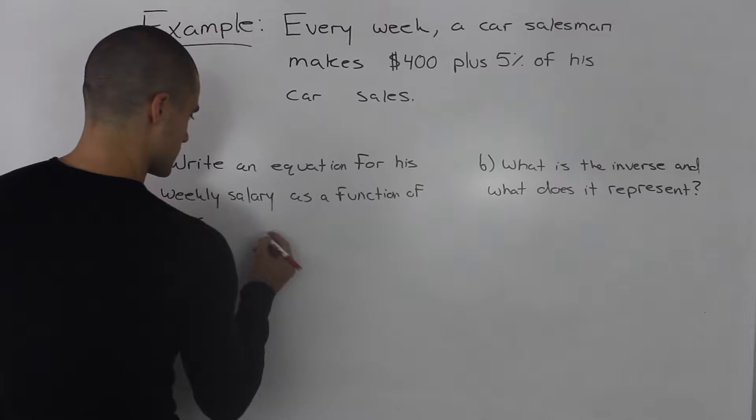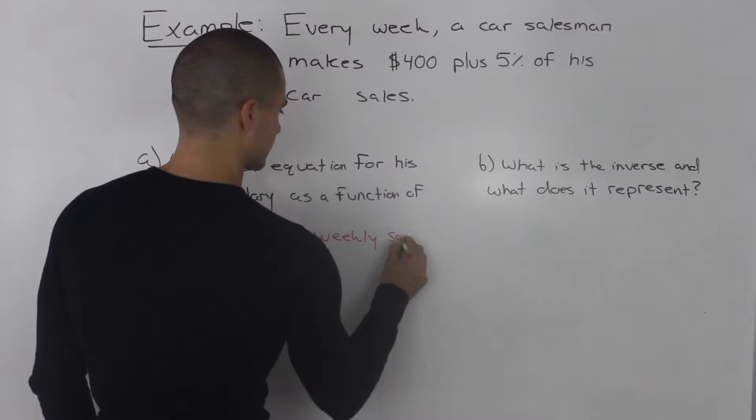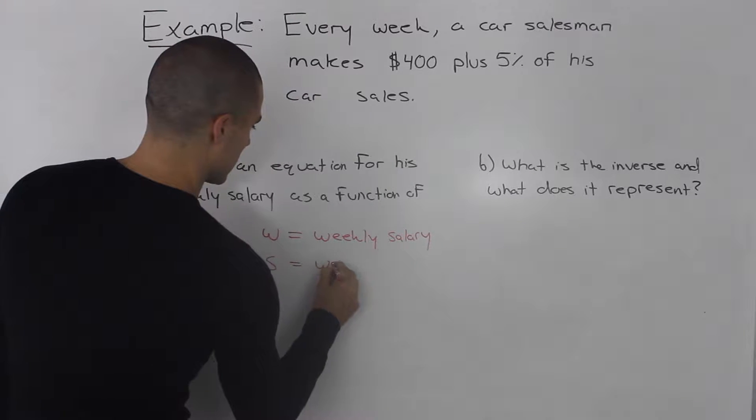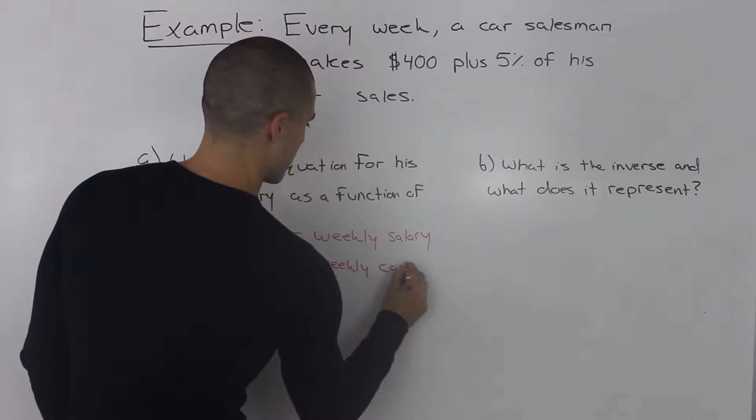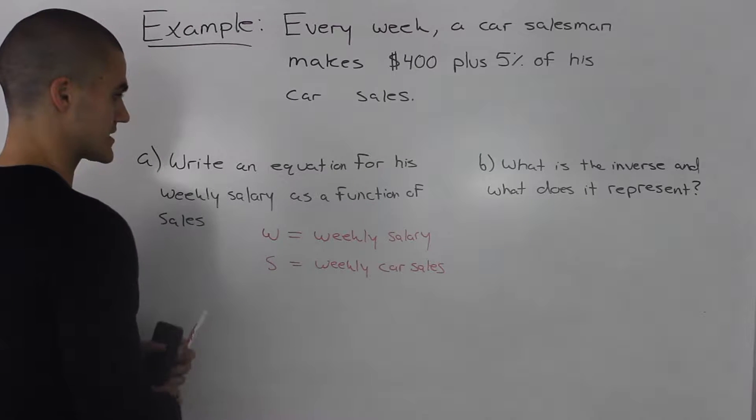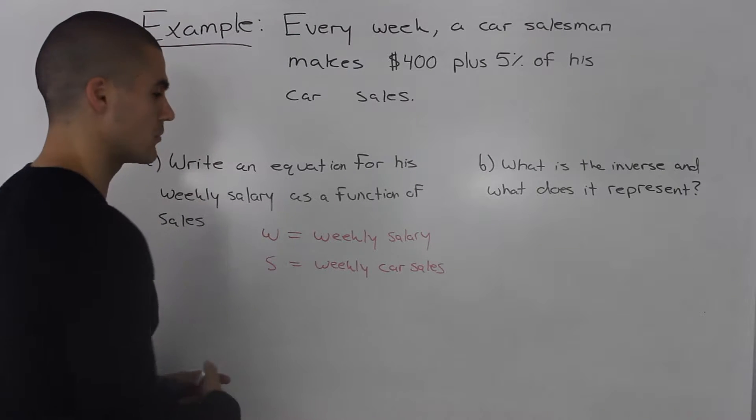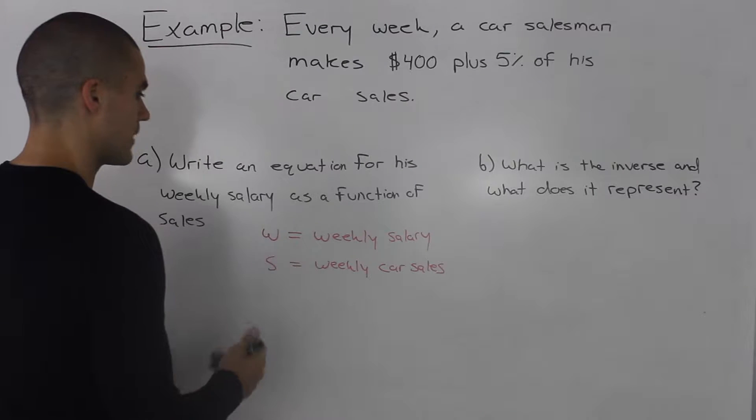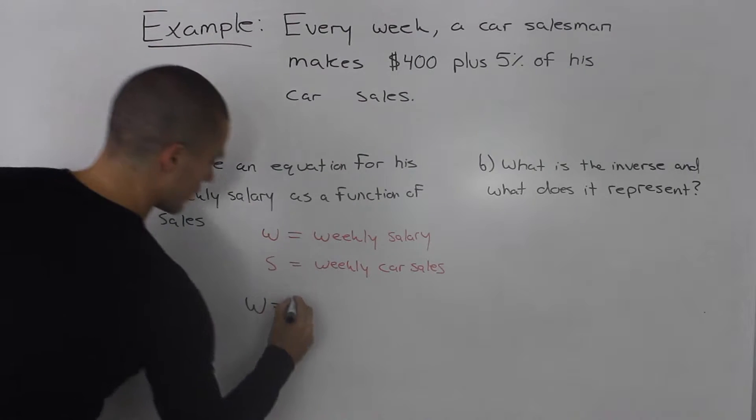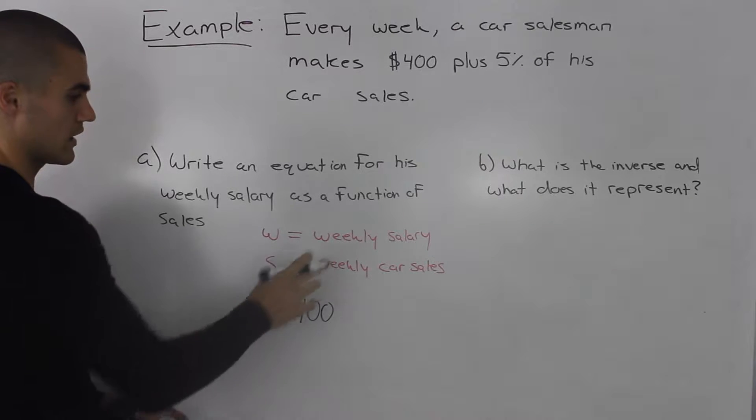Let's introduce some variables. Let W equal his weekly salary and let S equal his weekly car sales. If we were to make an equation for his weekly salary as a function of his car sales, the weekly salary would be the dependent variable and the car sales would be the independent variable. What does he make per week? Well, he makes $400 as a base and then he makes 5% of his weekly car sales.